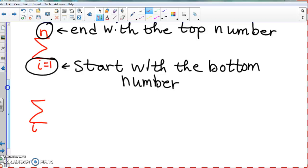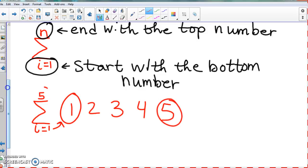So let's say we have i equals 1 here and it's at 5 on top. We start with the bottom number and end on the top number. So we start with 1, then we go to 2, then we go to 3, then we go to 4, then we go to 5. We start with the bottom number and end with the top number.